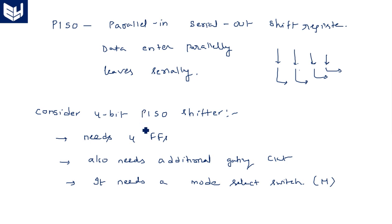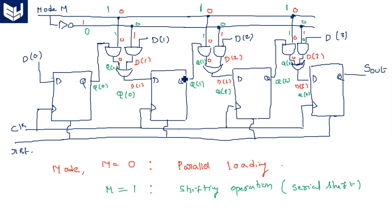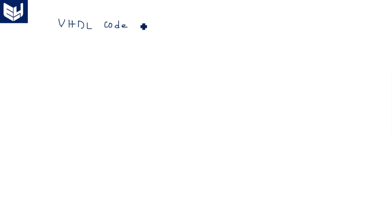We have considered a 4-bit parallel in serial out shift register. As seen in the diagram, we need 4 flip-flops and some additional circuitry. The additional circuitry handles two separate operations: loading the data parallelly and shifting it serially. We use two AND gates — one for loading and one for shifting — whose outputs are connected to an OR gate. The entire operation is controlled by the mode pin: mode=0 means parallel loading, mode=1 means serial shifting.